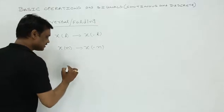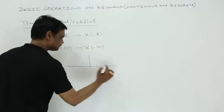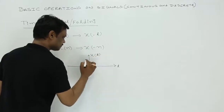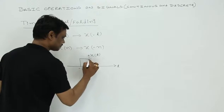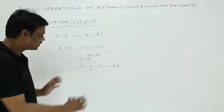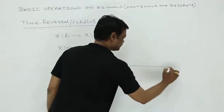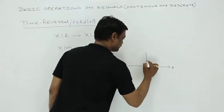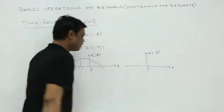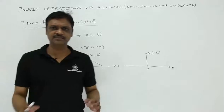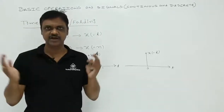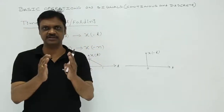For example, this is a signal x of t. Now I want to draw x of minus t. How do you draw x of minus t? The simple procedure is that on the y-axis, you just fold the signal.